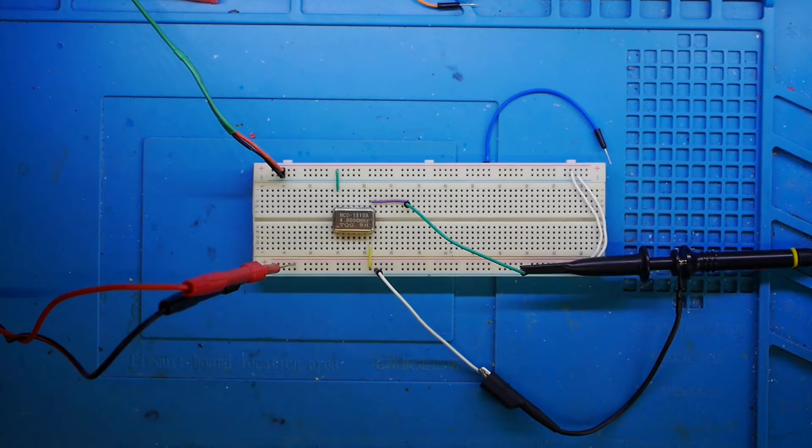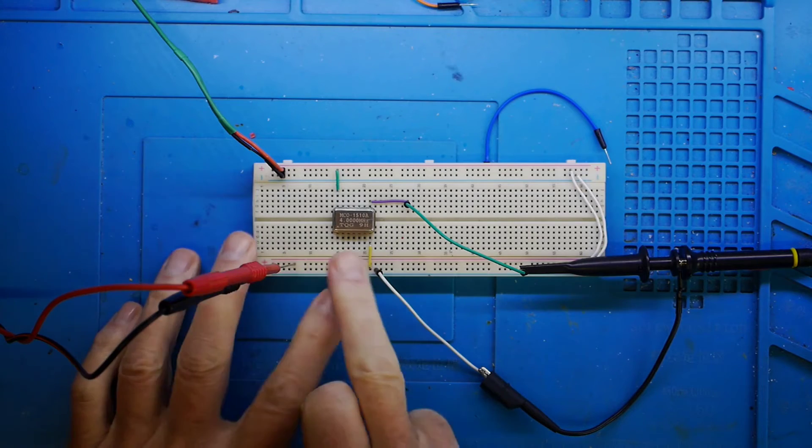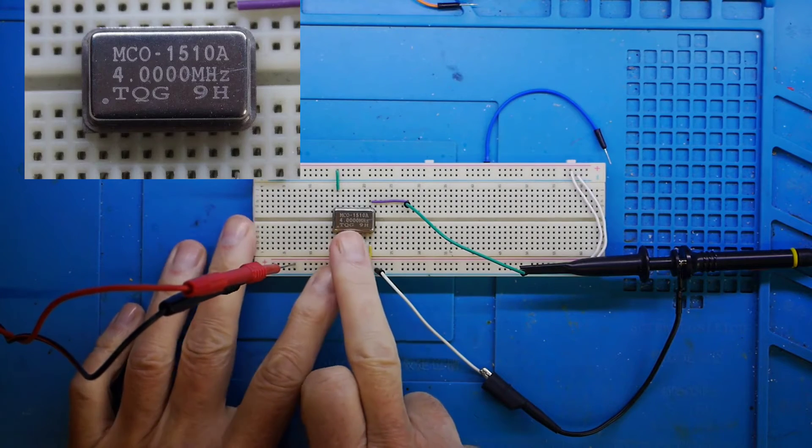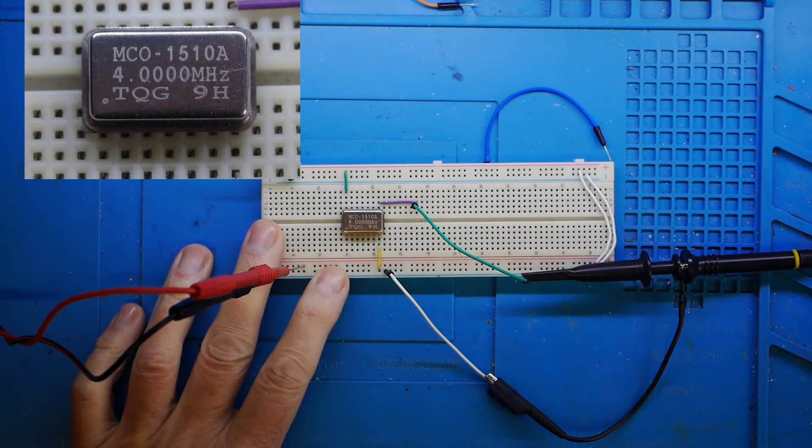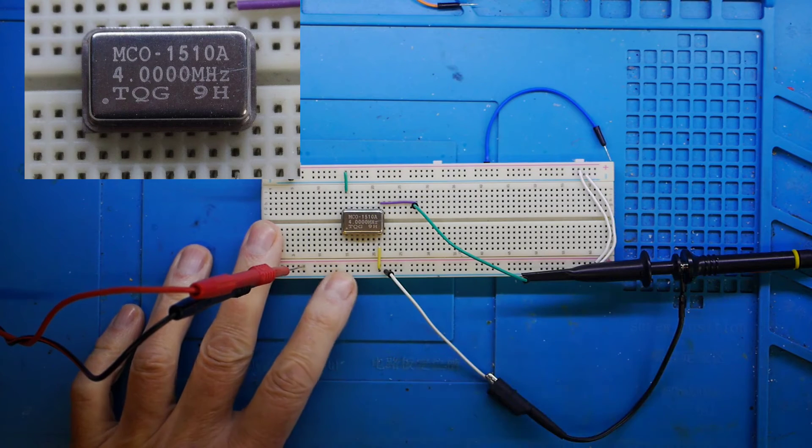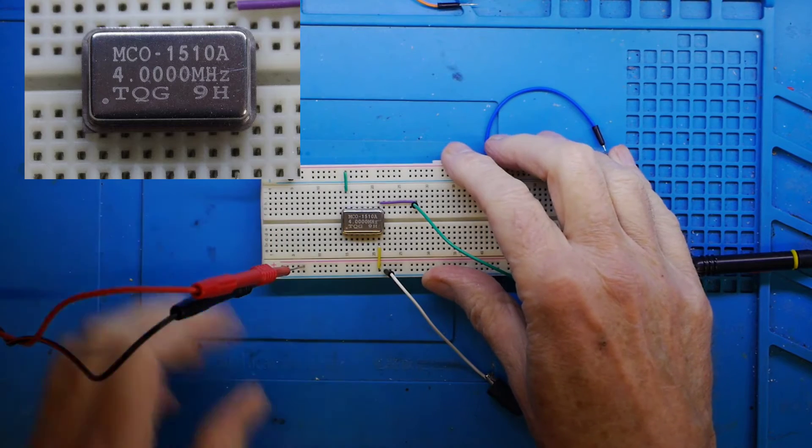Okay, so first up then on the oscillator front, it doesn't really require a circuit diagram. It's one of these things, it's an MCO-1510 in this case, the A version, which is a self-contained clock oscillator. I say clock oscillator, that's the kind of thing they're usually used for.